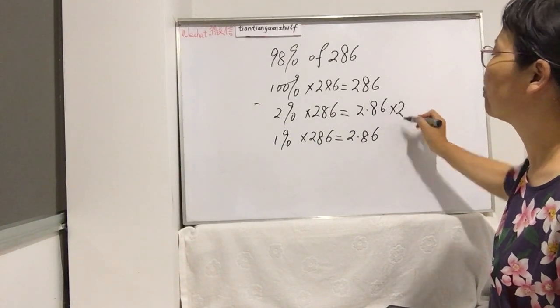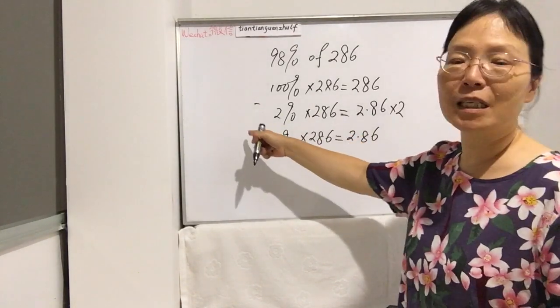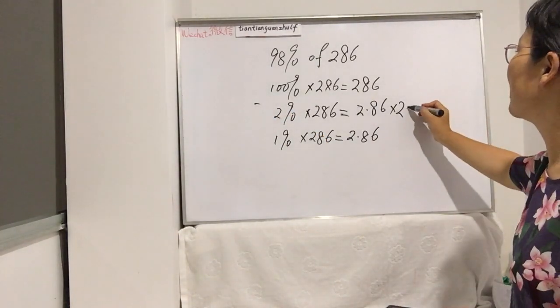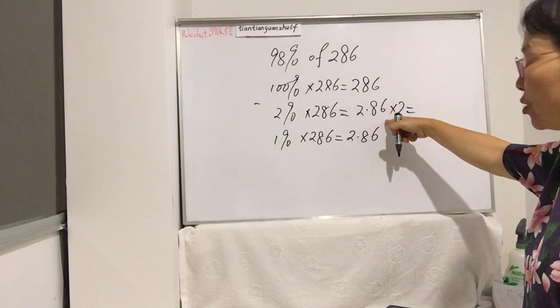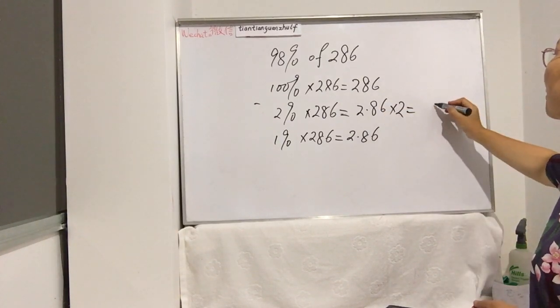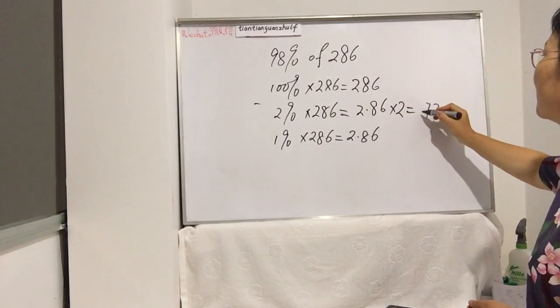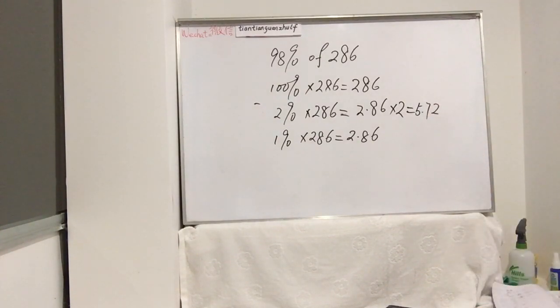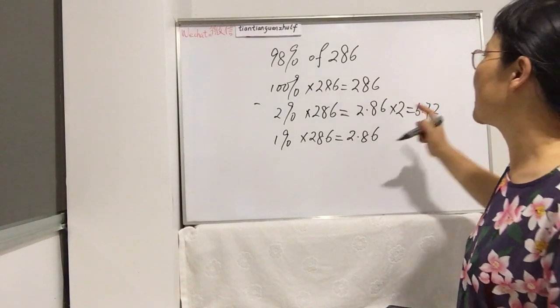And then 2% of 286 is 2.86 times 2, because 2% you can see is 2 times 1%. So this we just worked out is 5.72.